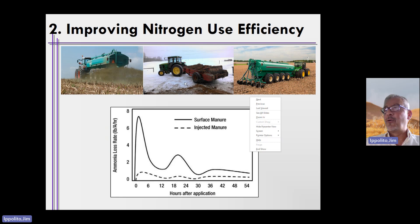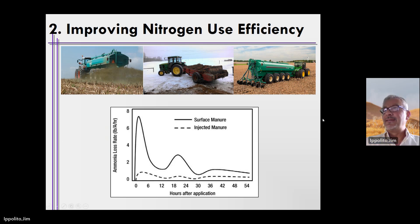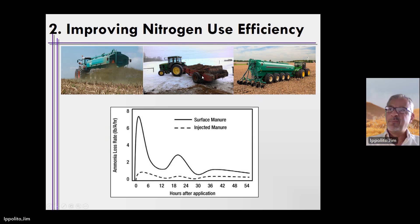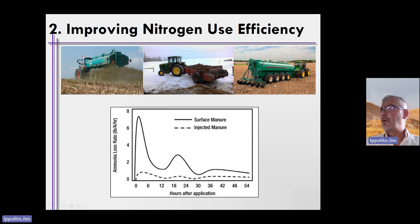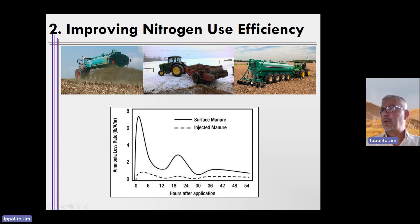Why is this not a great idea? Because where is the manure going to go when the snow melts? Would it run into a creek? Maybe. Here's another example: this is liquid manure application, but it's injected instead of surface applied.